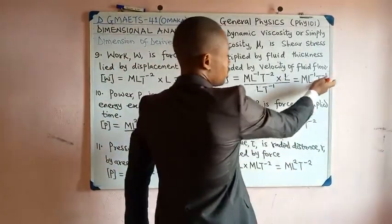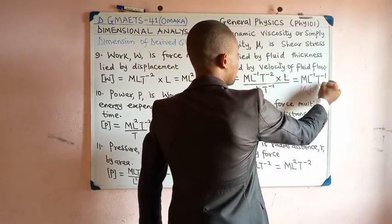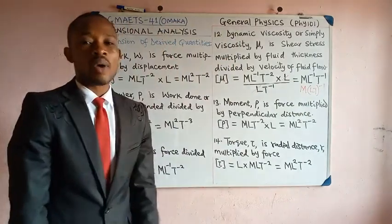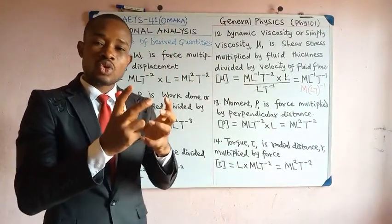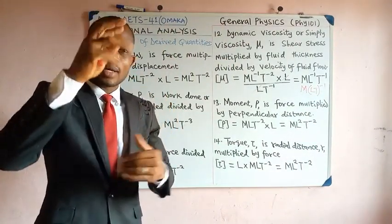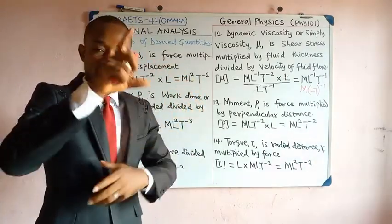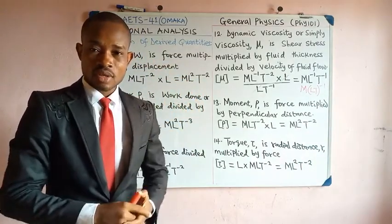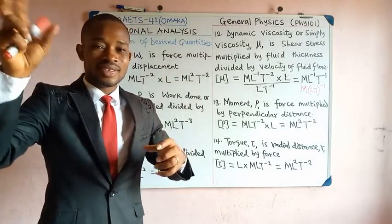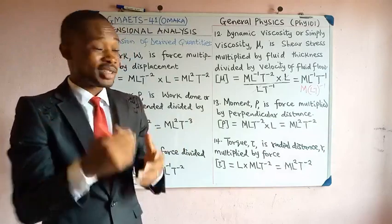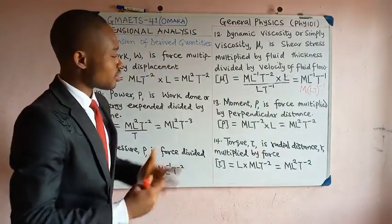One may also write this dimension as M(LT⁻¹)⁻¹, factorizing the power out since L and T share the same power. Note that when multiplying or dividing, a power affects all terms involved; this rule applies here with the factorization.